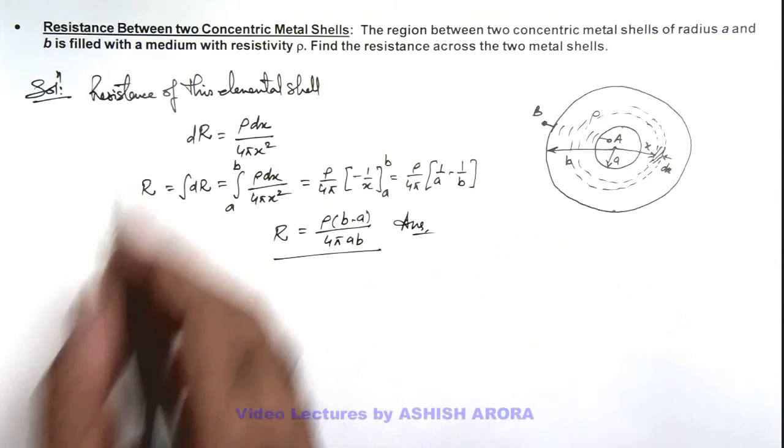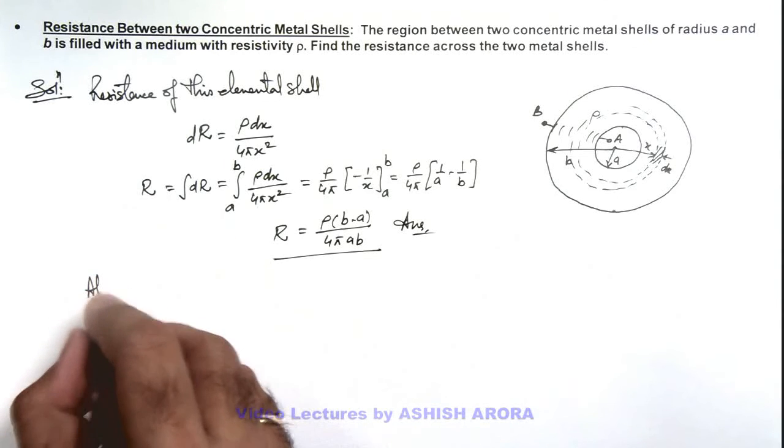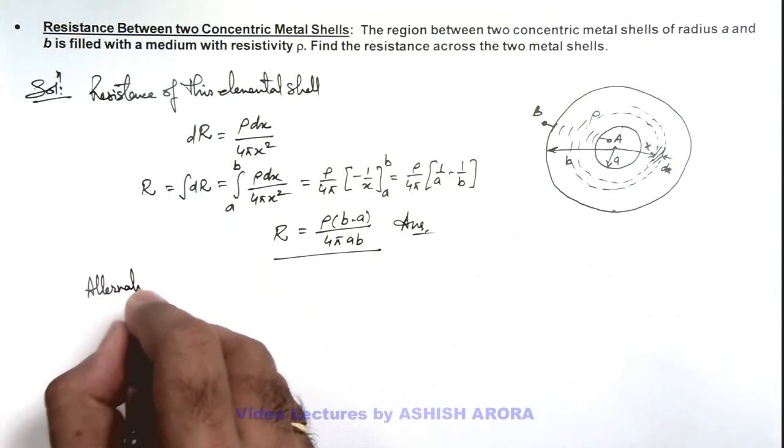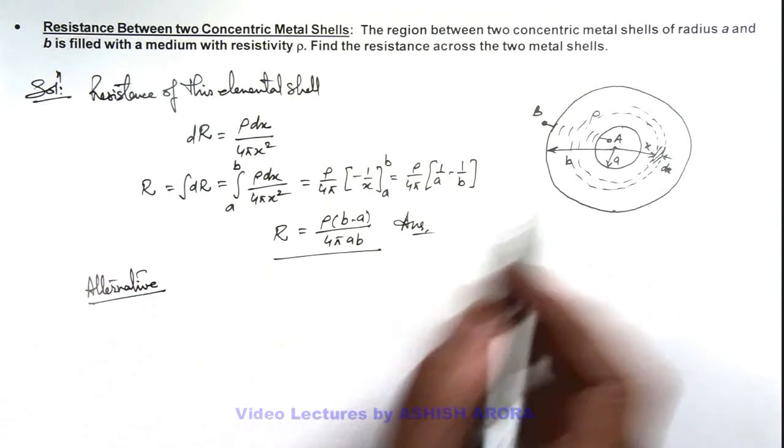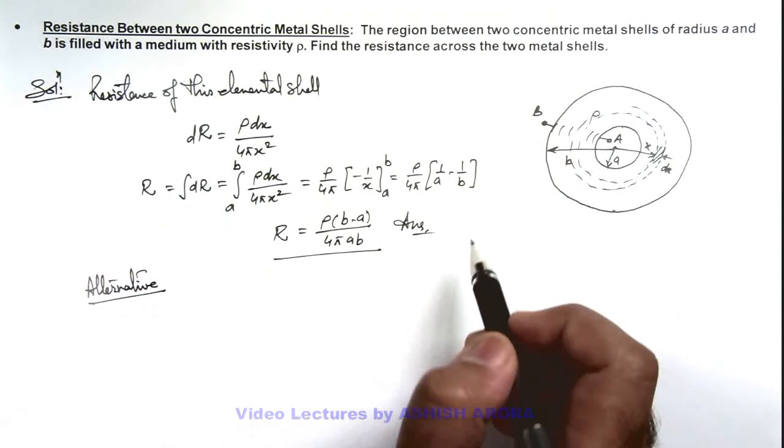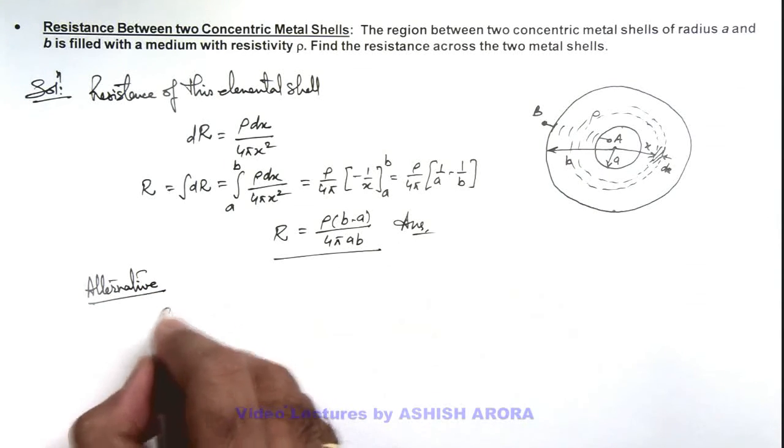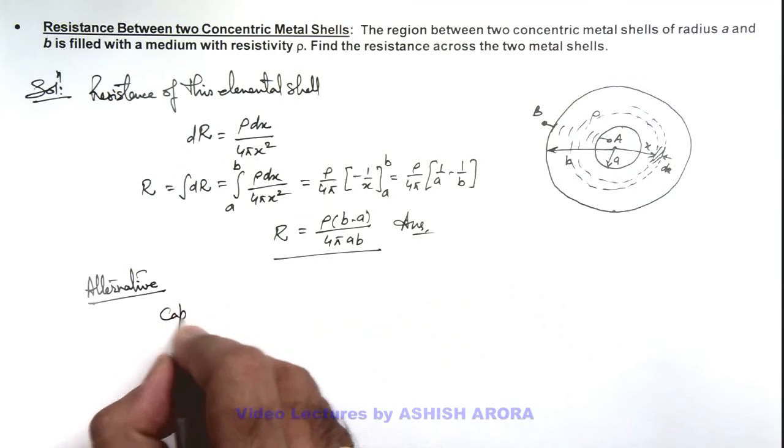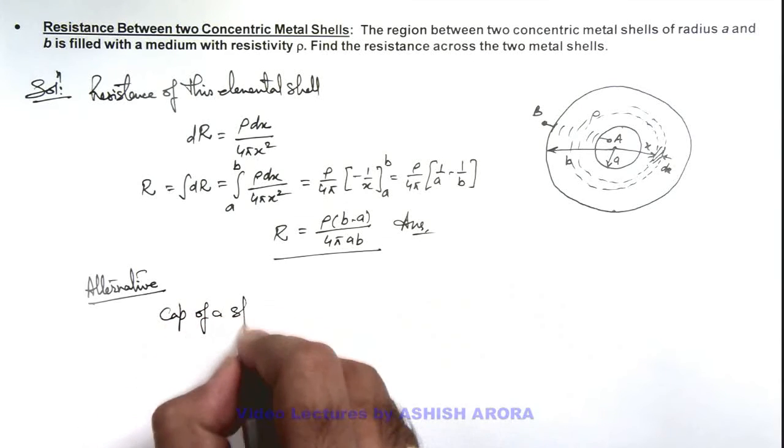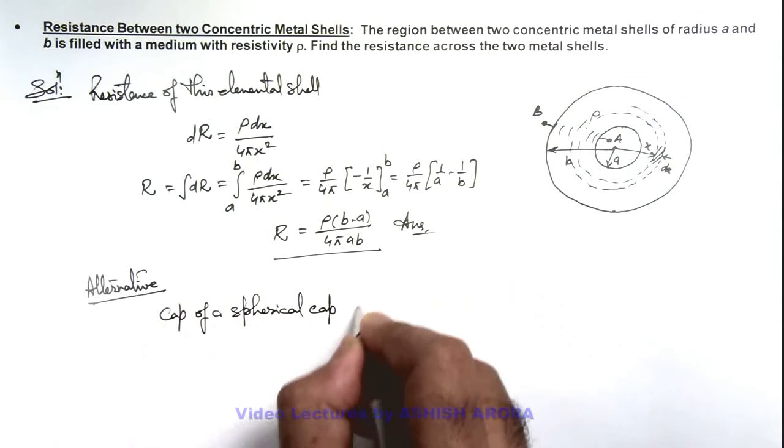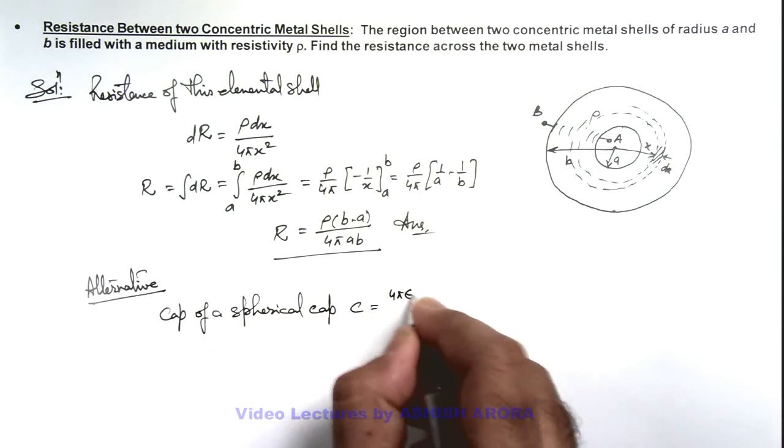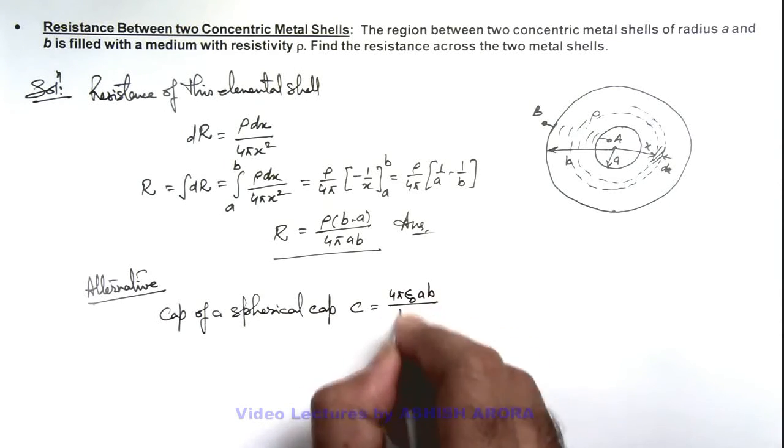The same problem can also be solved using an alternative way, where we can consider this system as a leaky capacitor because we know capacitance of a spherical capacitor is given as C equals 4π ε₀ ab upon b minus a.